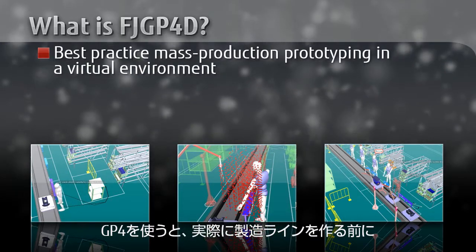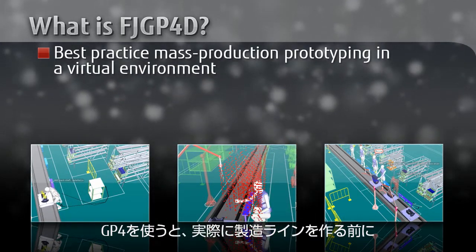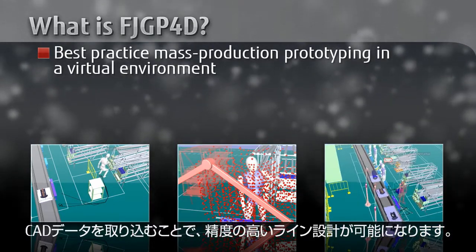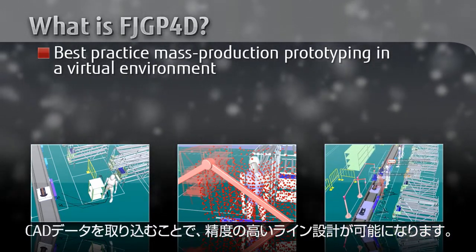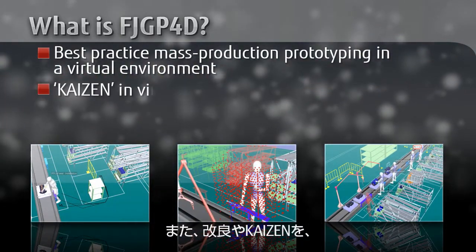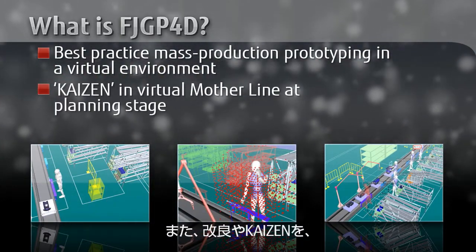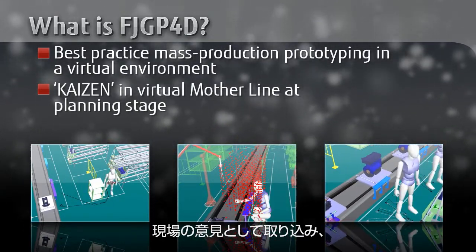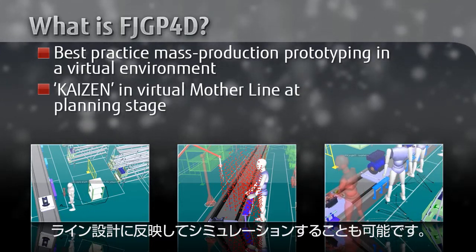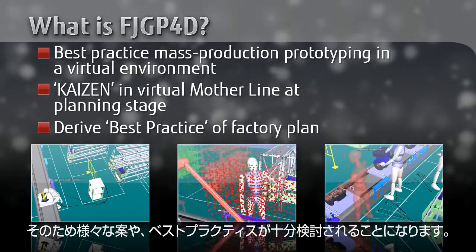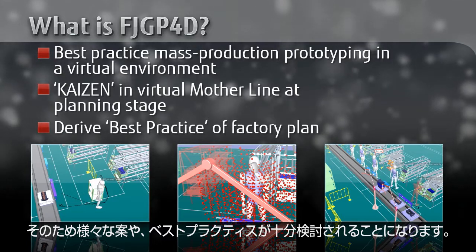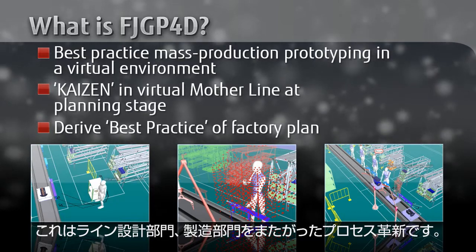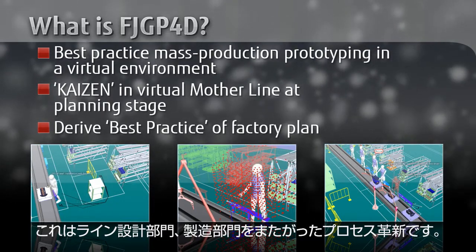GP4 creates detailed virtual spaces to enable production trials before plans for the actual production line are drafted. By using real data, it is easy to create highly detailed production line designs. It is also possible to reflect improvements or Kaizen from suggestions of industrial engineers on virtual designs and then perform simulations. This enables creation of various proposals at the planning stage and selection of the best practice — revolutionary for both industrial engineering and production departments.